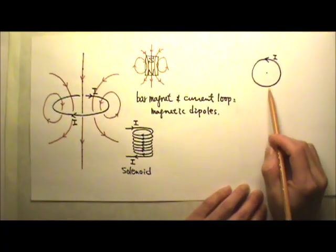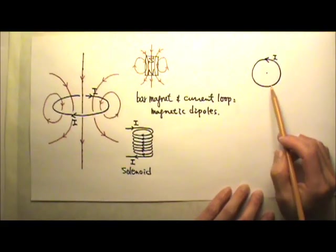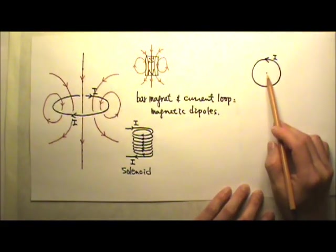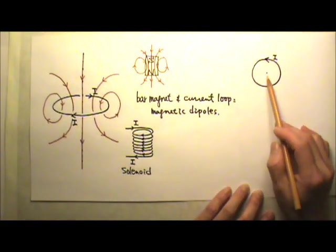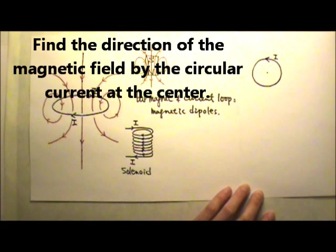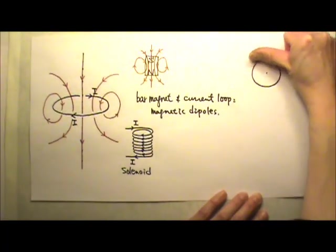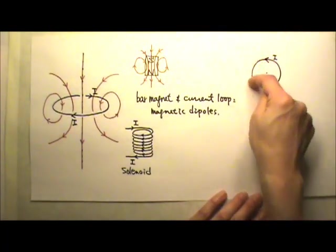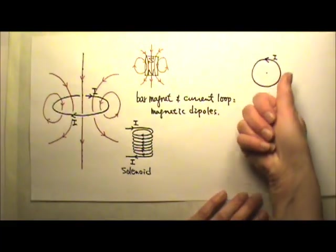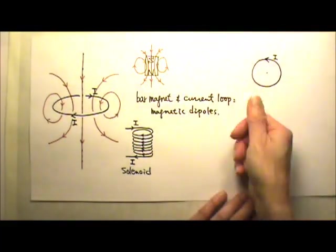Now let's try this question. There's a circular current in the plane of this paper. Find the direction of the magnetic field produced by this circular current at the center of the circle. We can use our thumb to follow the current — we don't have to put our thumb at a specific spot, because the current goes around this way, so we can use any part of the circle and get the same result.